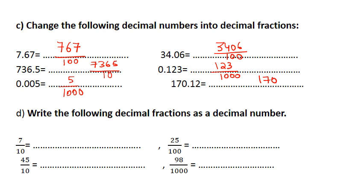And this over 100. Now I'm going to do the ordered decimal fractions — I need to write them as decimal numbers. So I have 7 in the tenths, so it's 0.7. I have 45 over 10, so I have only 1 digit in the decimal part, which is 5, so it's 4.5. Here I have 2 digits and I have 25, so it's 0.25 — 25 hundredths. Now 98 thousandths is written as 0.098.